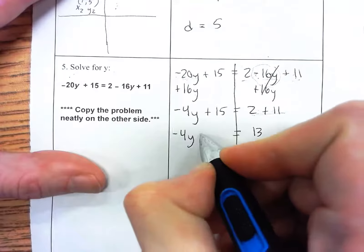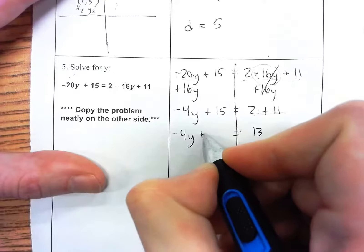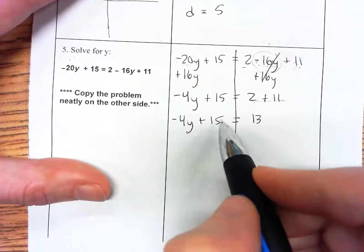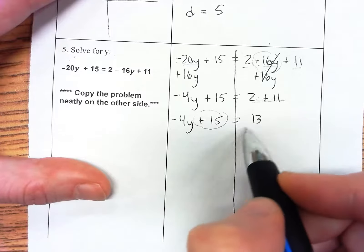Carry down everything on this side: negative 4y plus 15. We almost have y by itself on this side. We have to get rid of this to move it over. This is plus 15.